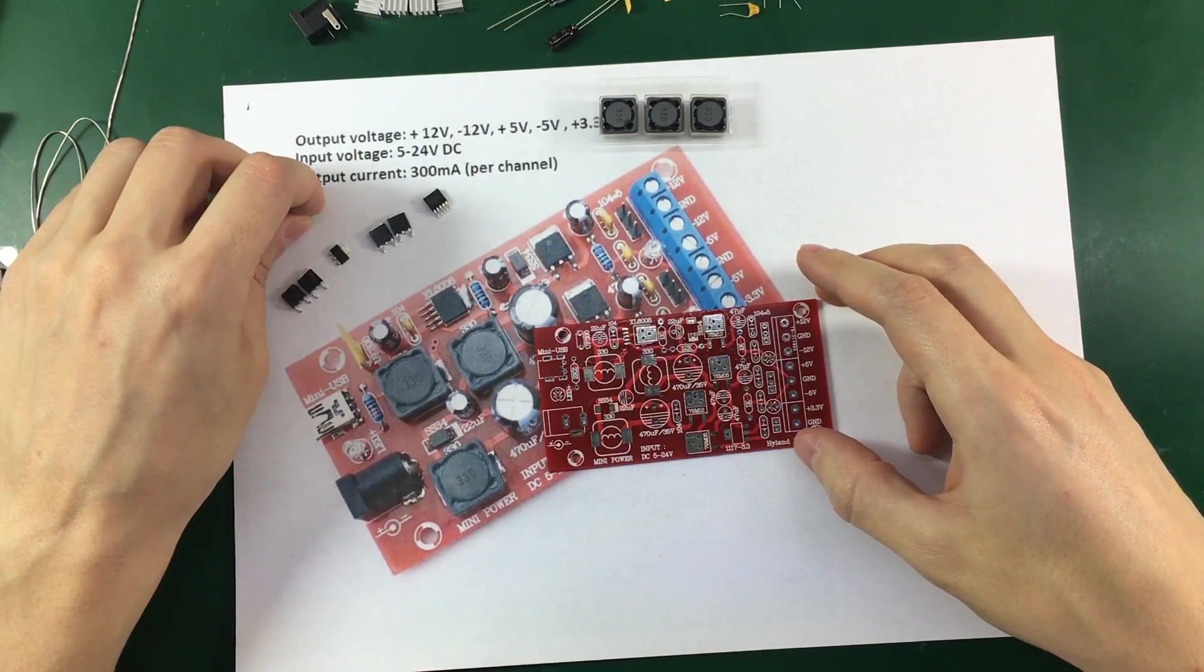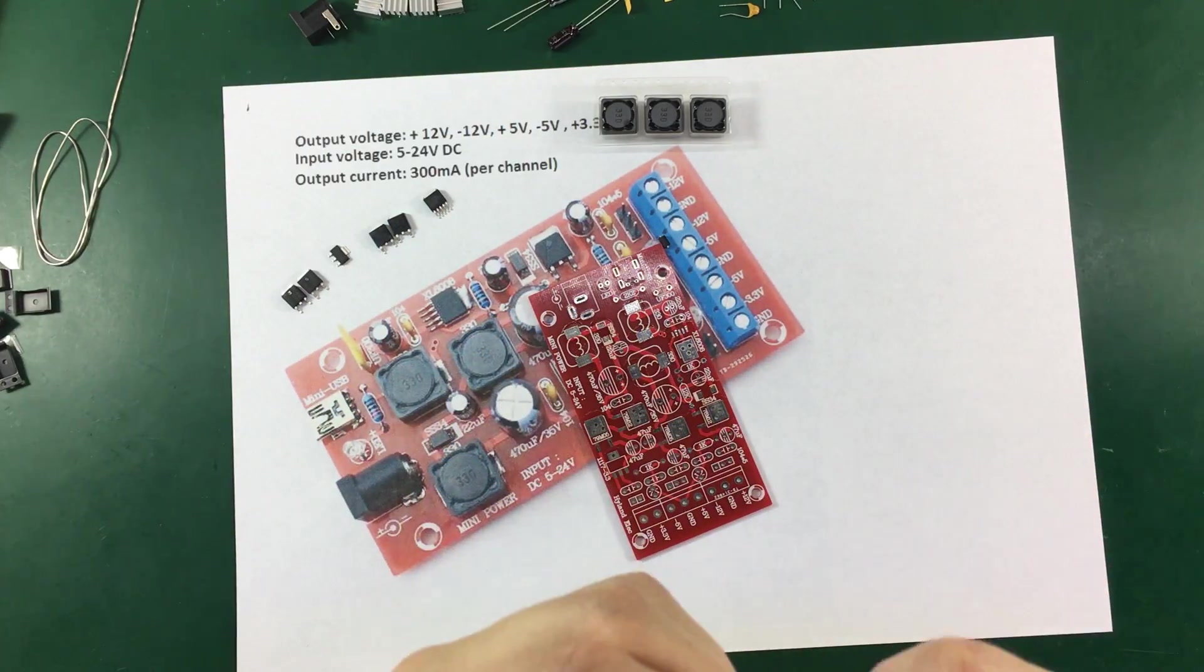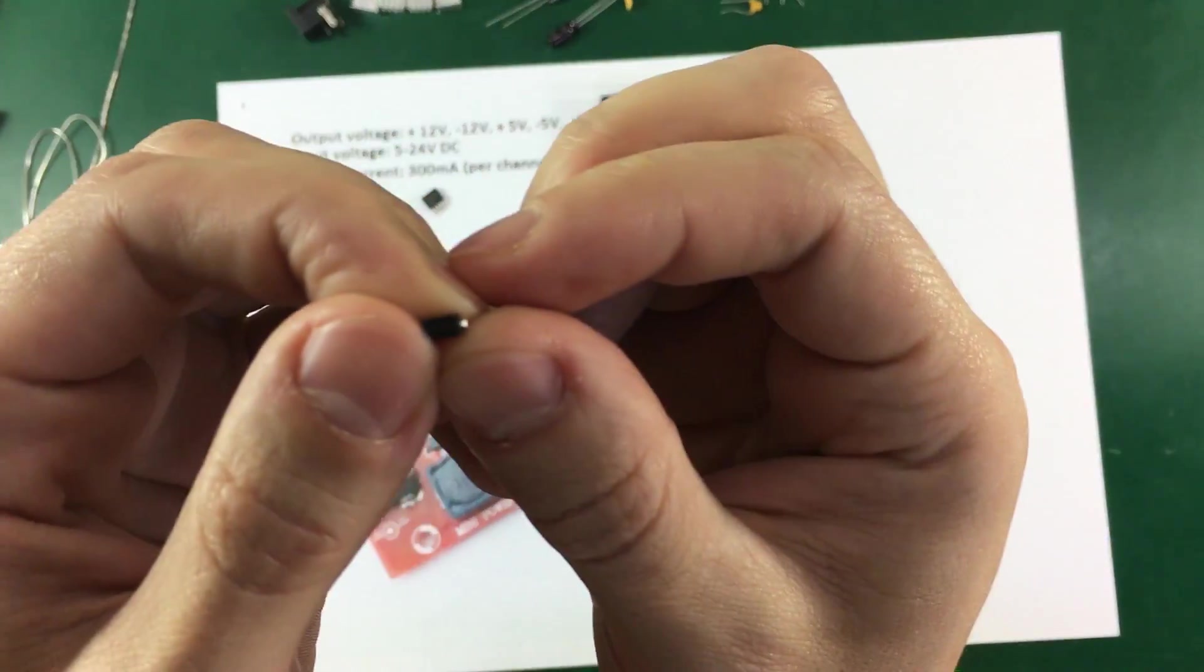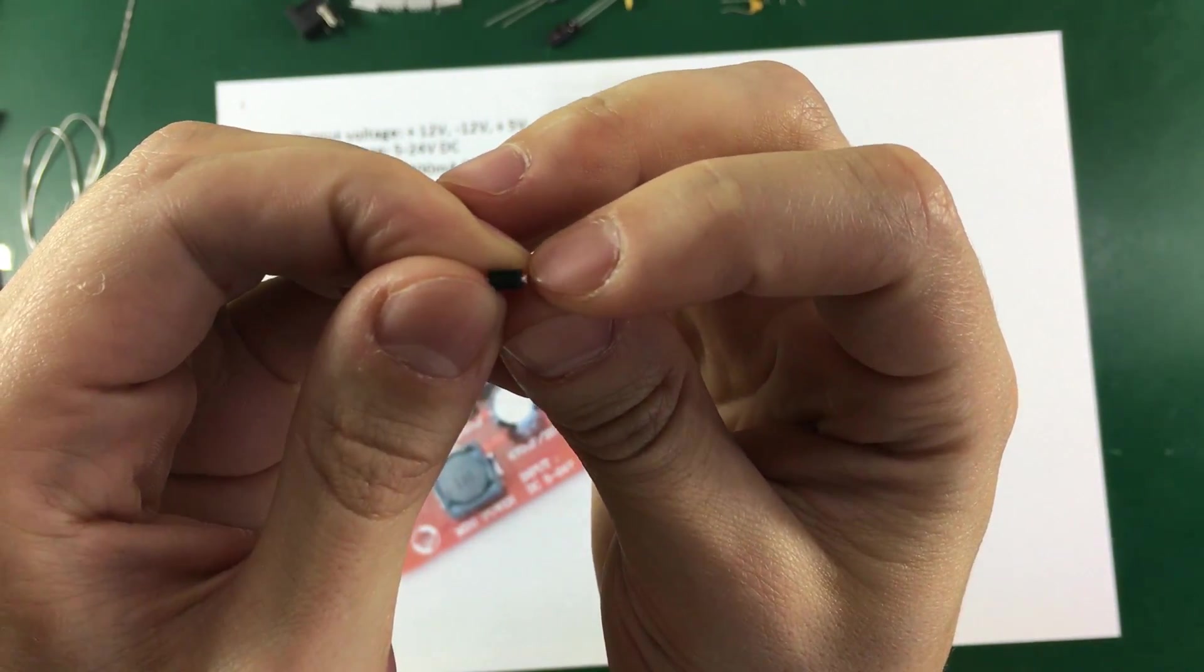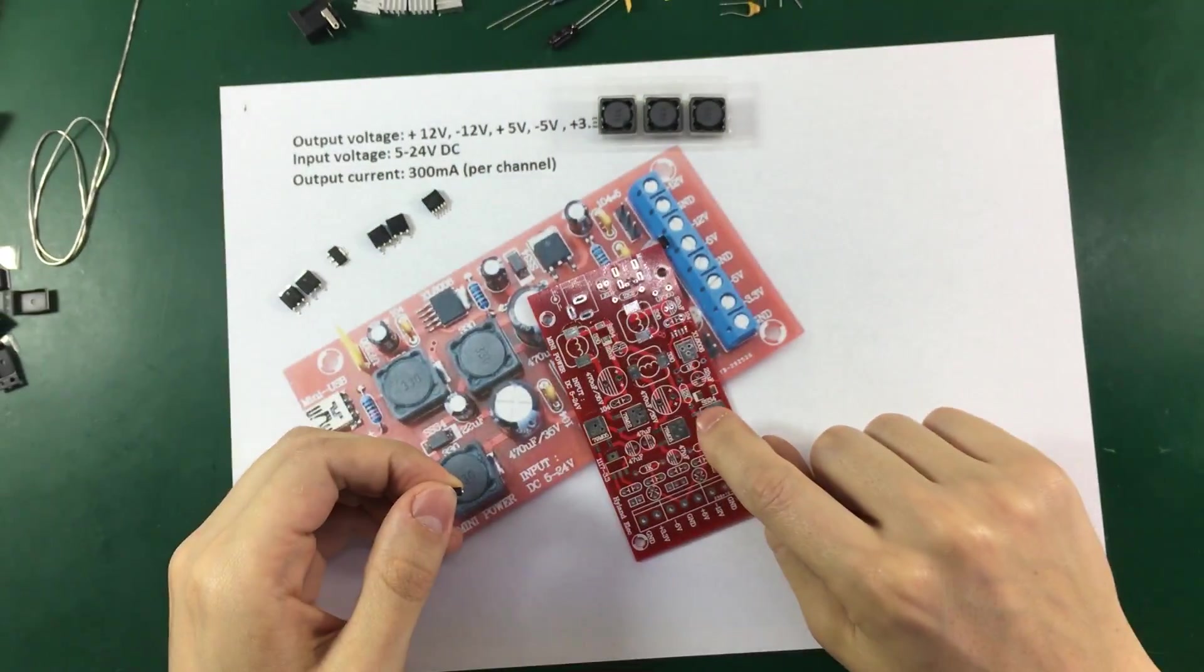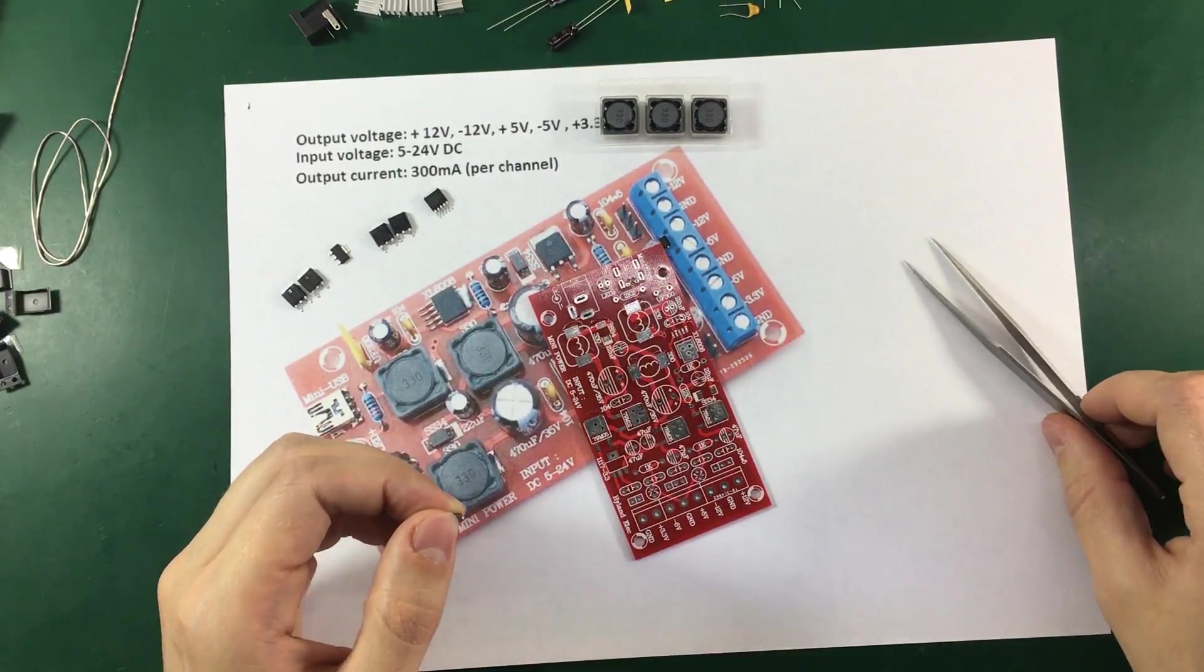So let's start with these Schottky diodes. You need to make sure you get the orientation right and as you can see the cathode is marked by this stripe on the right of the package. And we have the same stripe for example marked right here on the PCB.